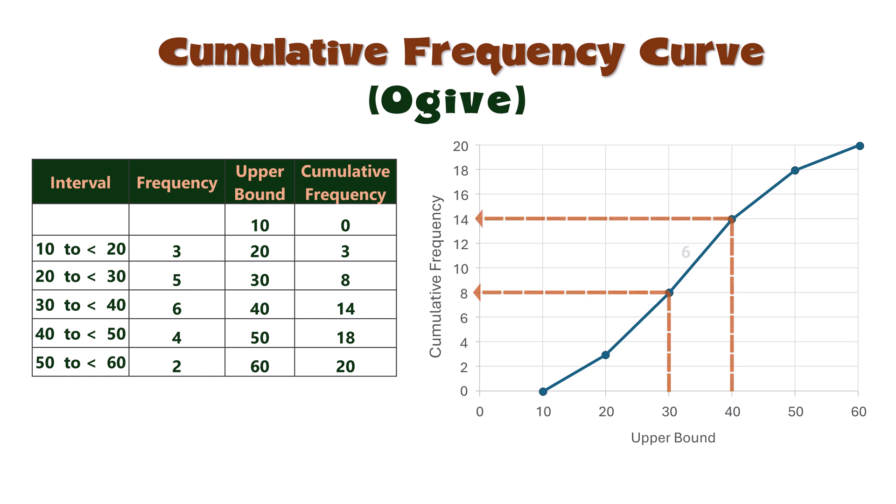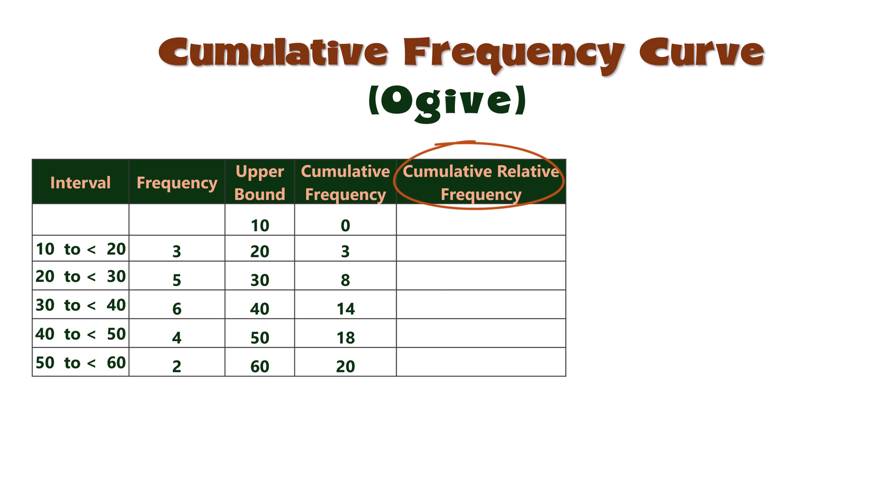Next, we can calculate the cumulative relative frequencies by dividing each cumulative frequency by the total frequency, which is 20. And here they are as cumulative frequency percents.